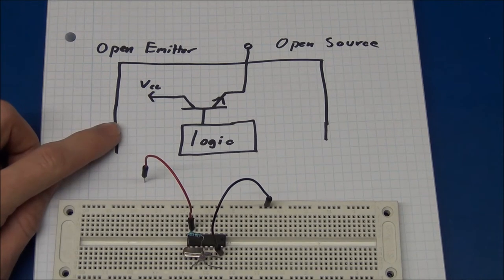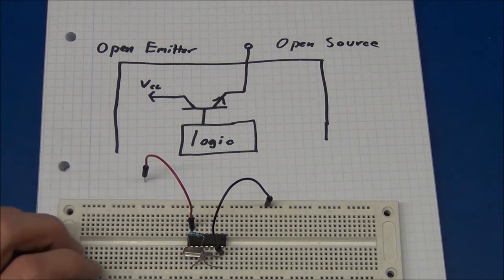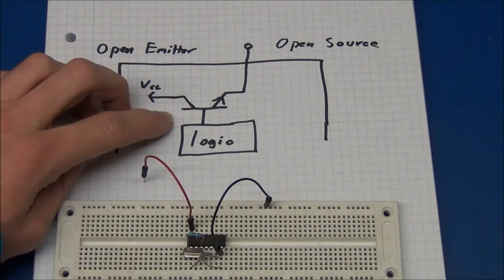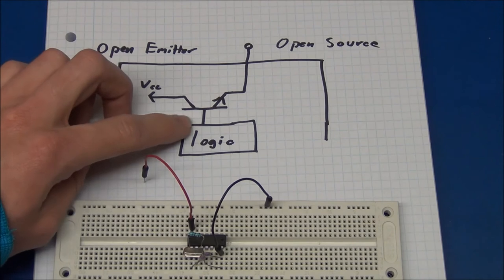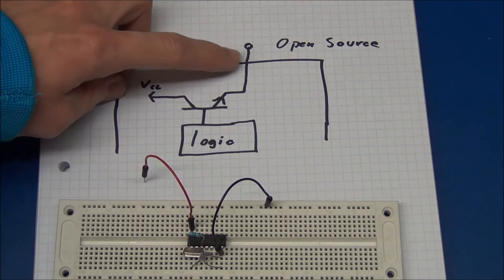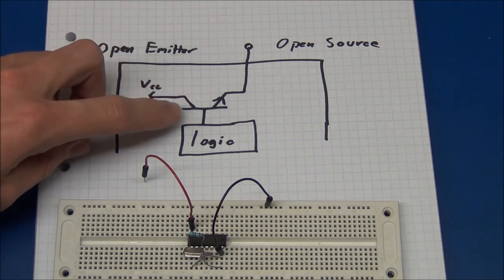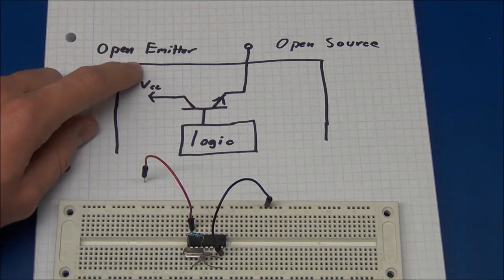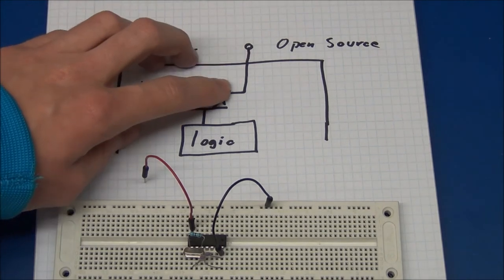The reason I included this is not because it's used in logic chips, but if you need to draw a lot of current from a chip, then you might need to add a transistor to it. And if you only add one transistor and you use the emitter to drive your load, then it suddenly becomes an open emitter output. And you have to remember that you cannot sink current with it.